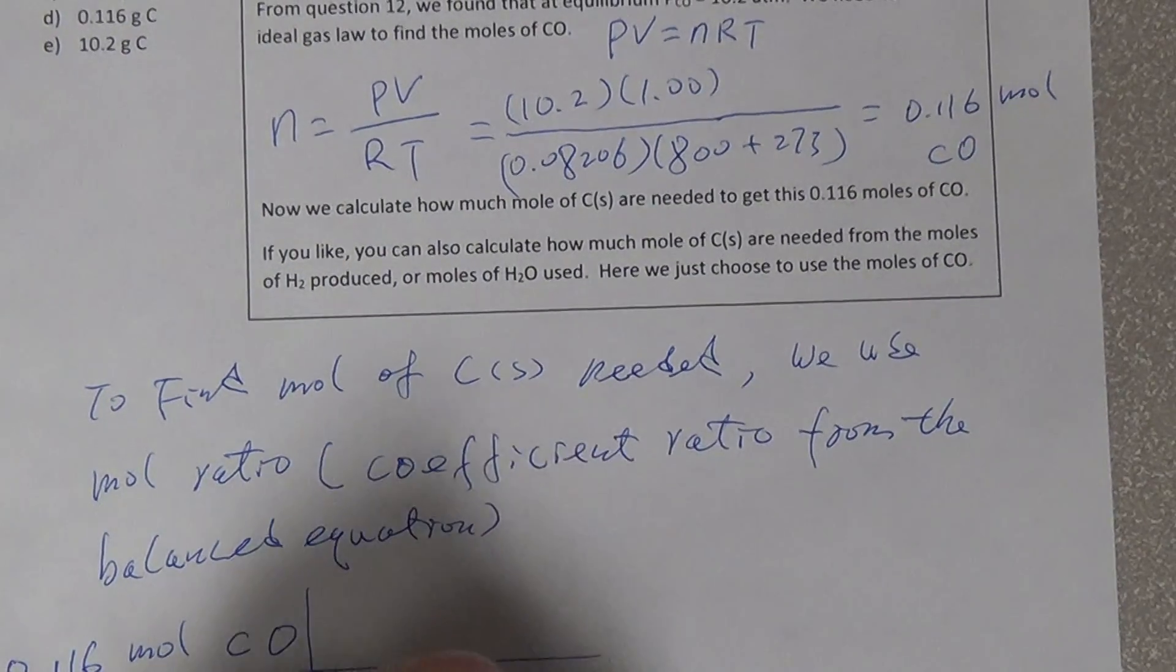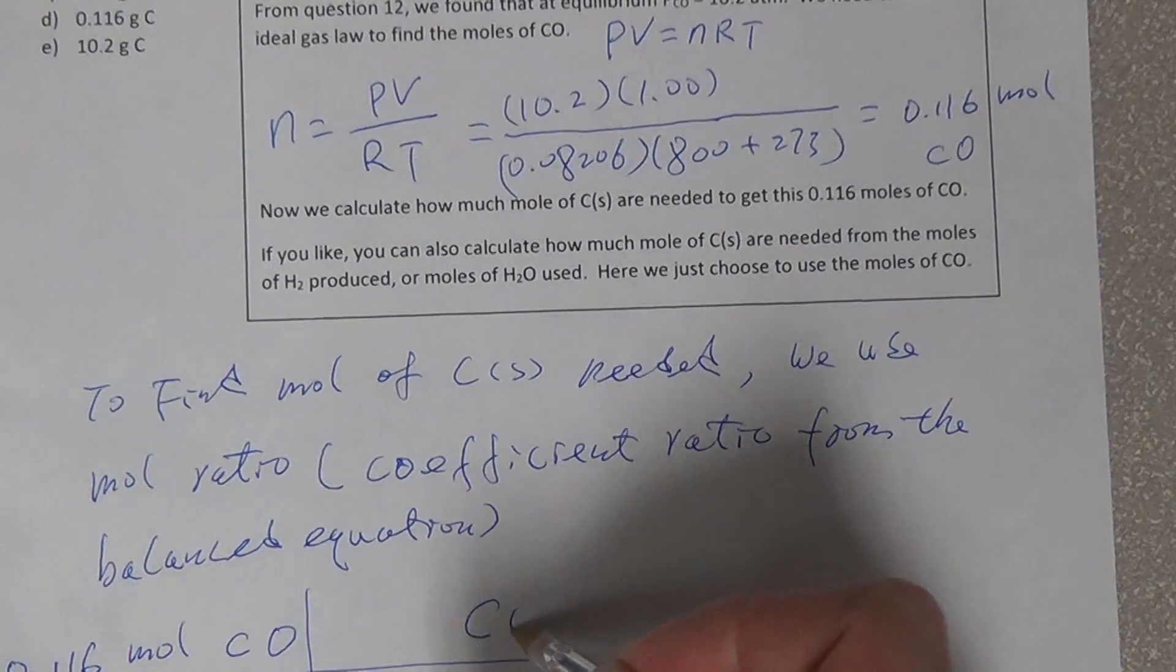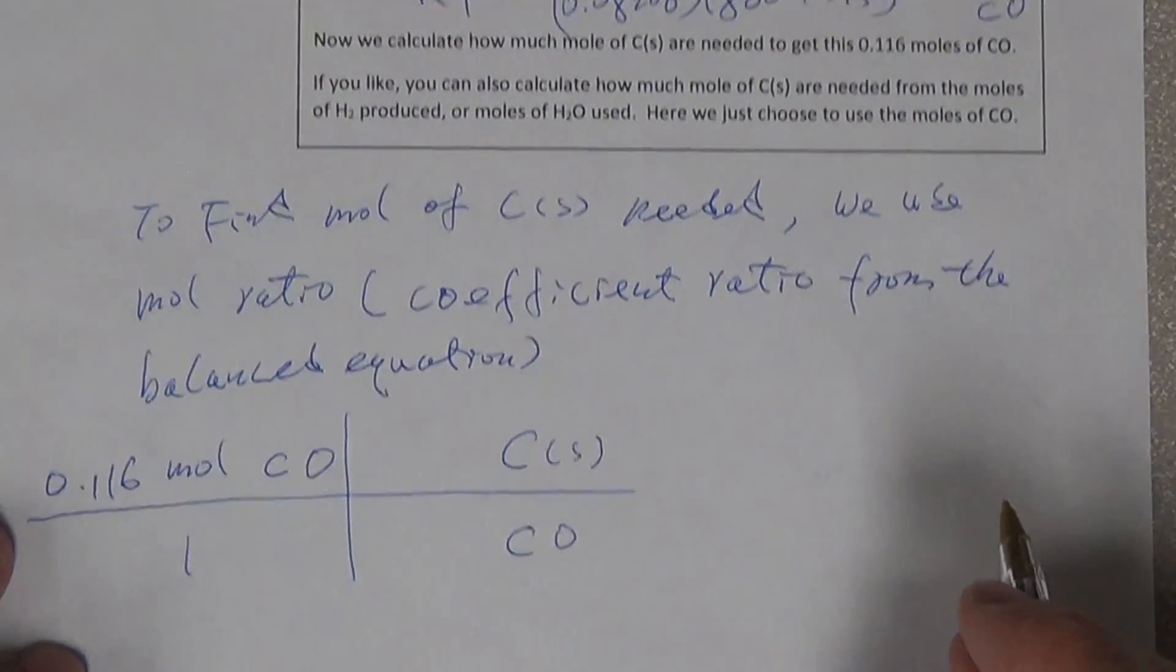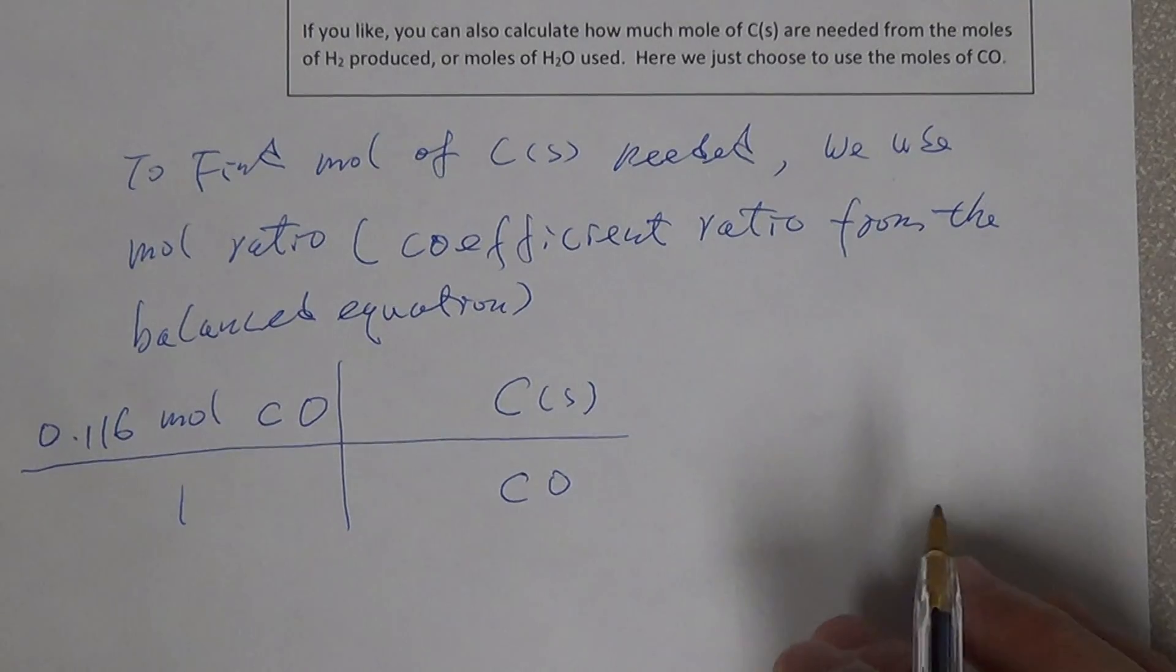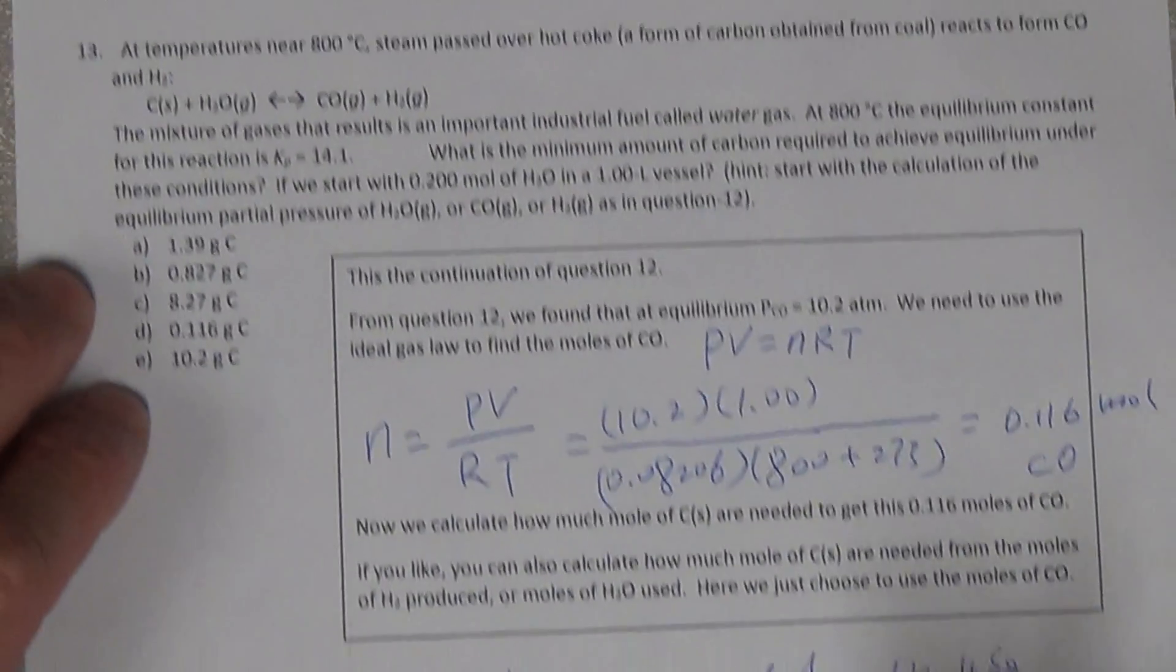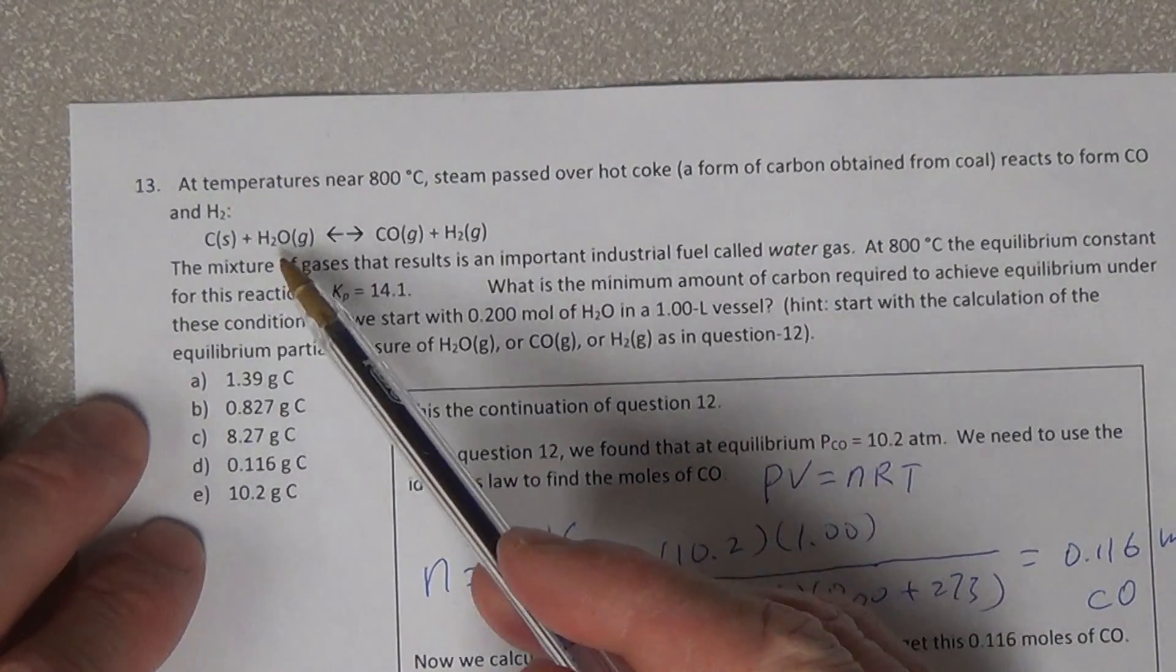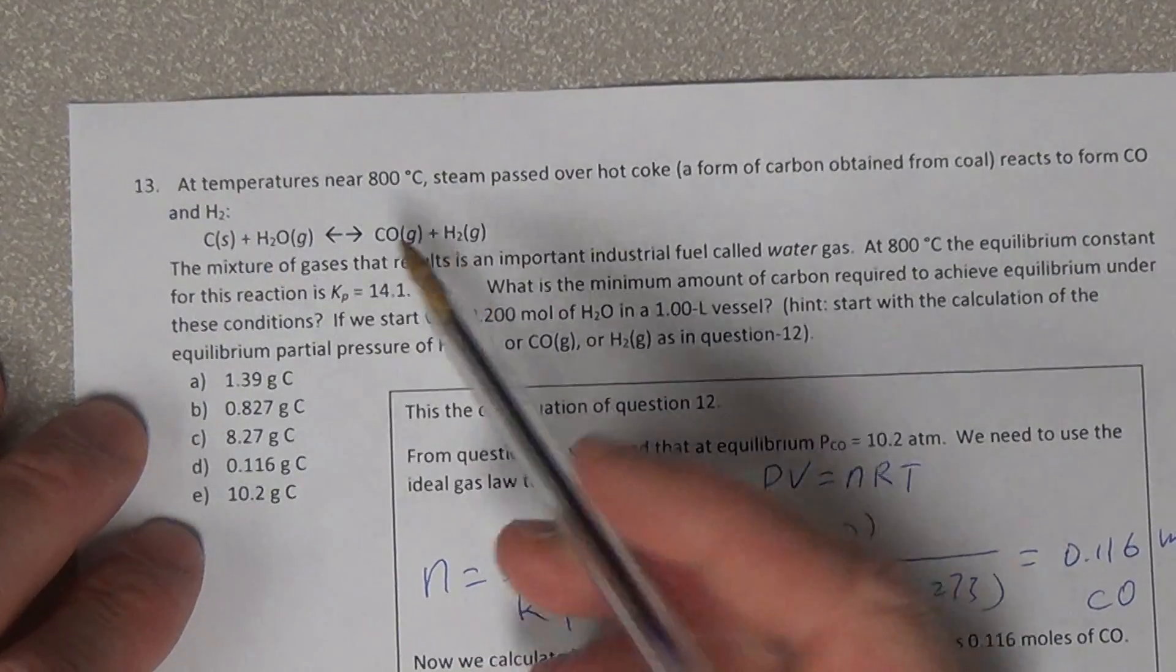Then we have to examine the coefficient in the balanced equation. So let's say the balanced equation, the coefficient for CO is 1.